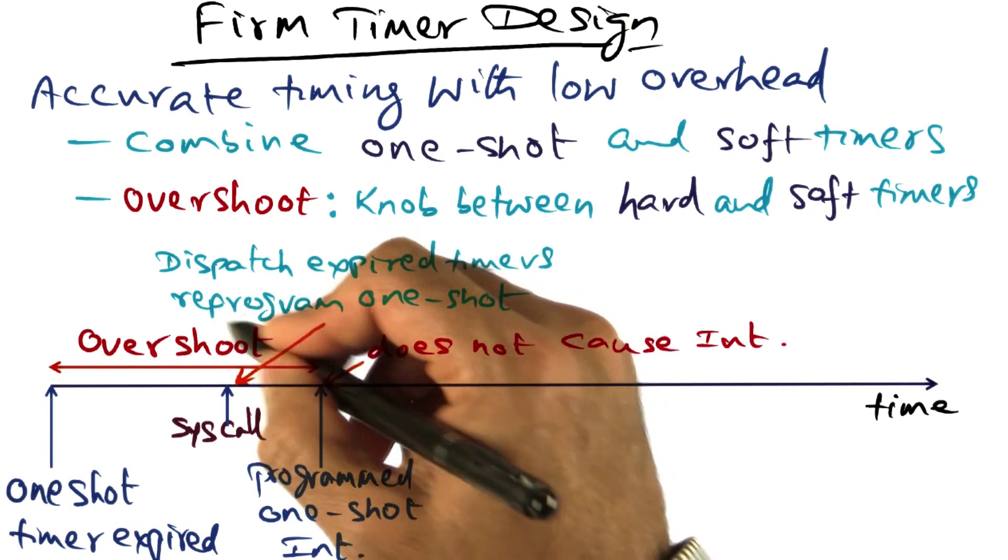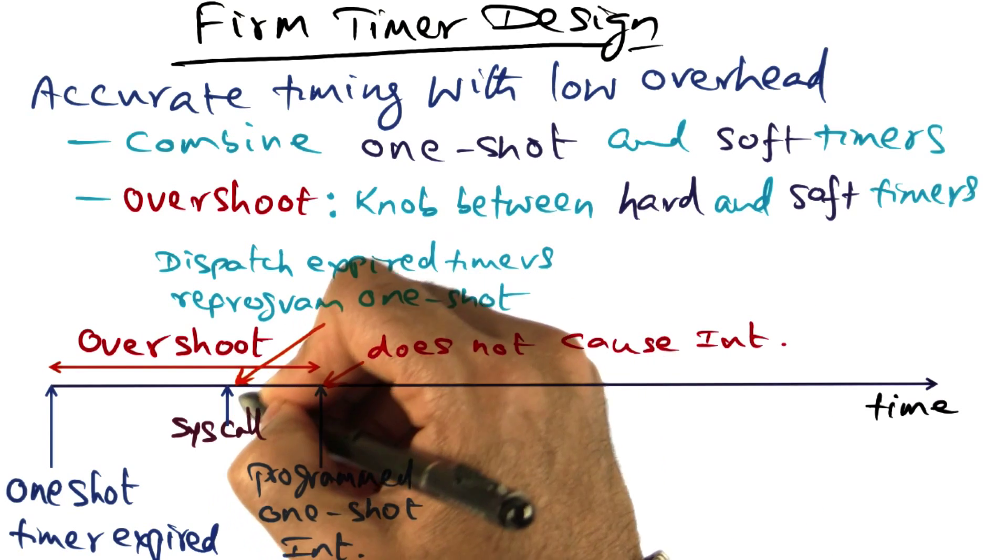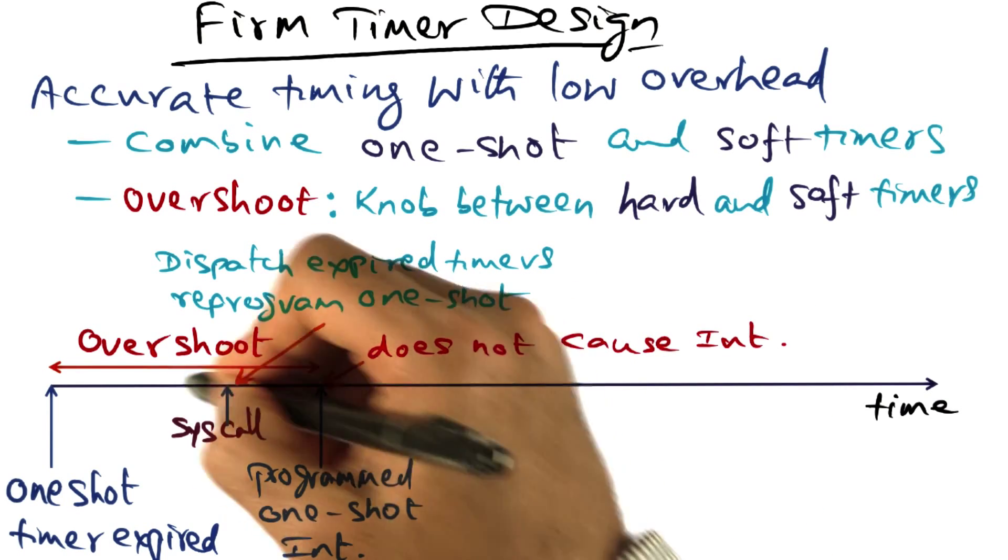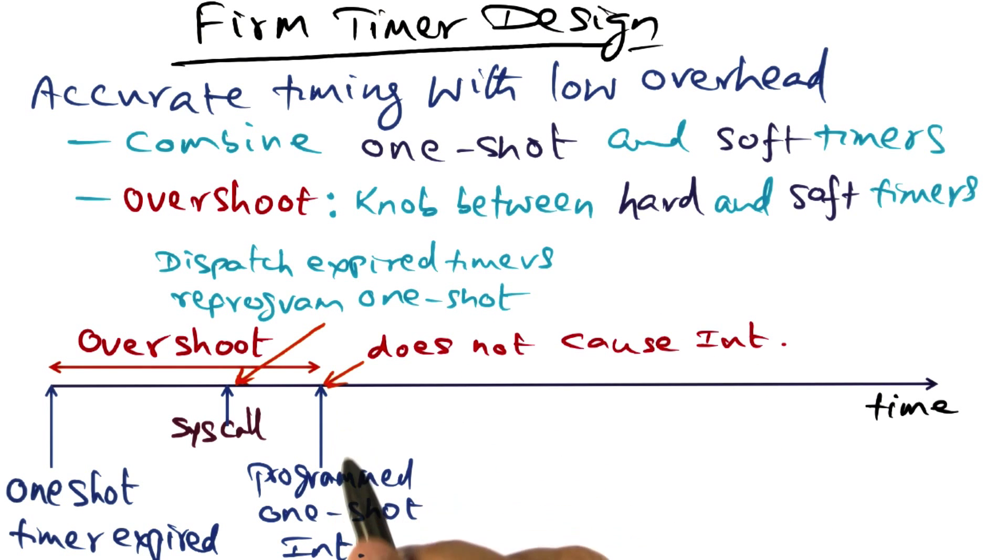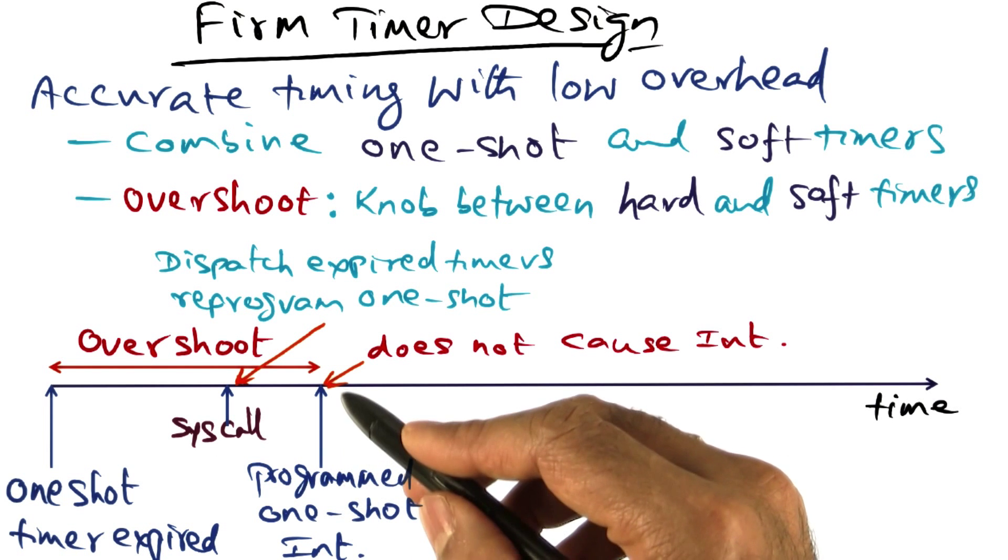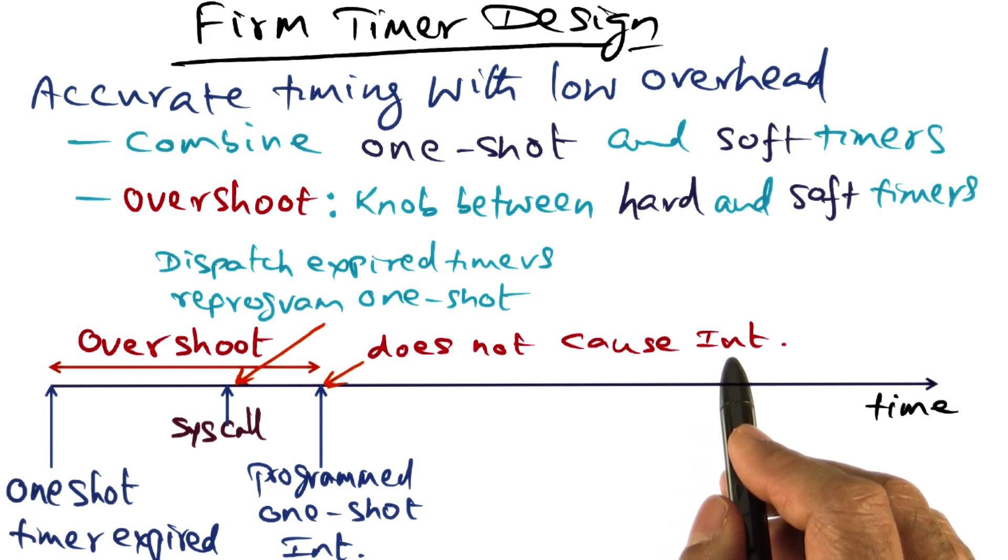The upshot of doing this, dispatching the expired timer at the point of the system call that is happening within this overshoot window, is that at the point at which this one shot timer has been programmed to interrupt, that is gone.